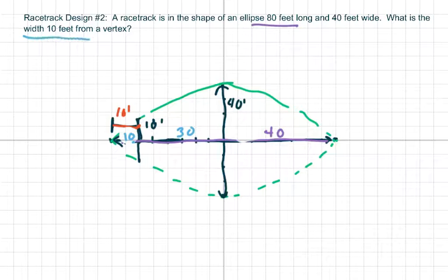So they want to know what the width is 10 feet from the vertex. So what they're looking for is this whole width right here. They want to know what the y is from the vertex.